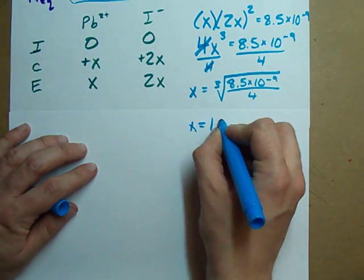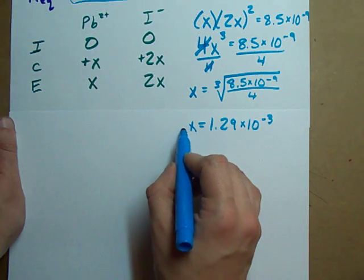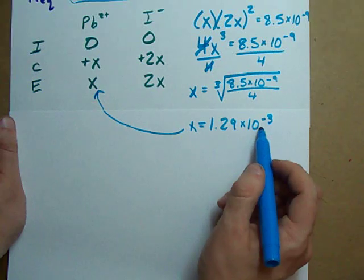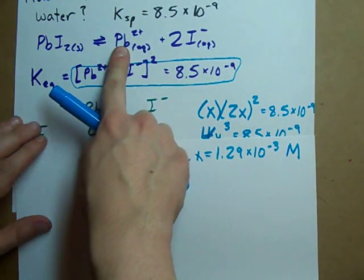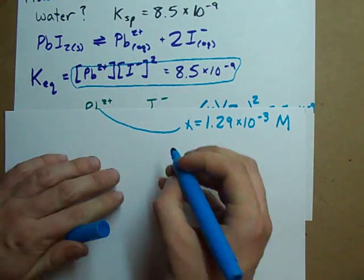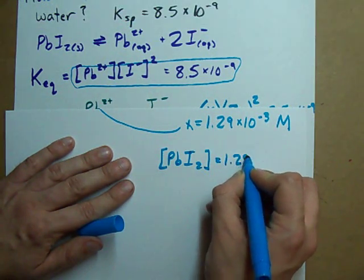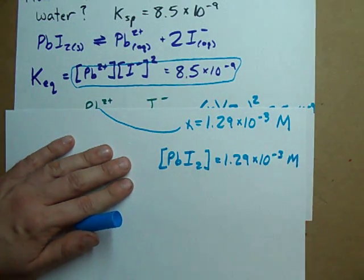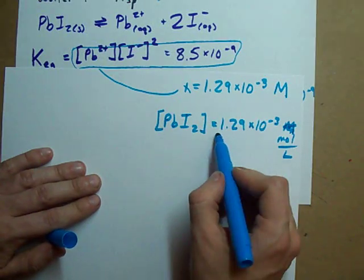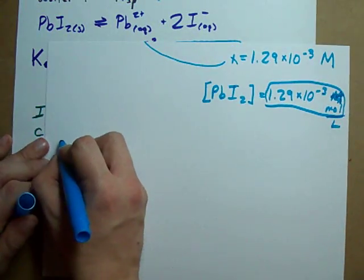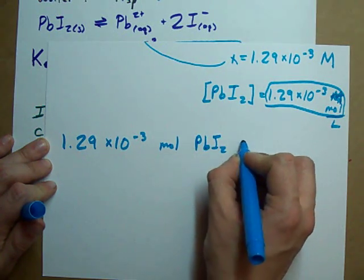X is 1.29 times 10 to the minus 3. So the concentration of Pb2+ that I end up with is 1.29 times 10 to the minus 3 moles per liter. Because I only get 1 Pb from each 1 PbI2, the saturation concentration of PbI2 in solution is also 1.29 times 10 to the minus 3 moles per liter. Remember that if this is in moles per liter, I can dissolve 1.29 times 10 to the minus 3 moles of PbI2 in 1 liter.